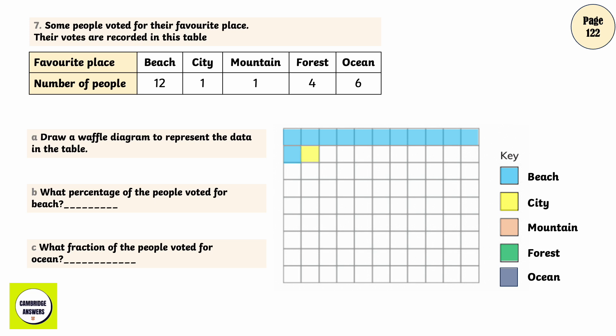Beach, City, Mountain, Forest, Ocean. What percentage of the people voted for the beach? 50%. What fraction of the people voted for the ocean? 1 fourth.